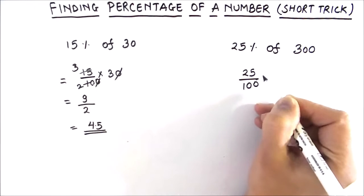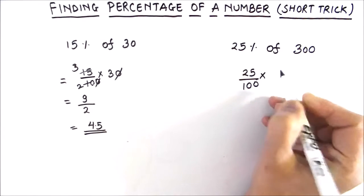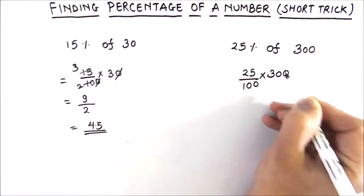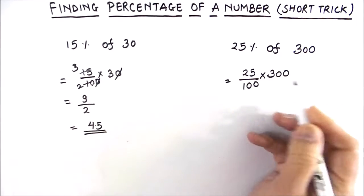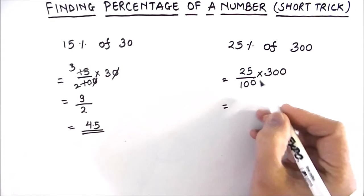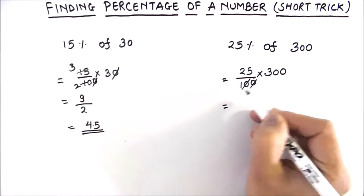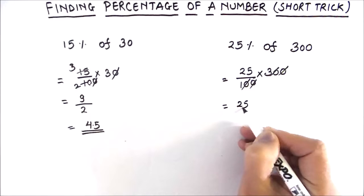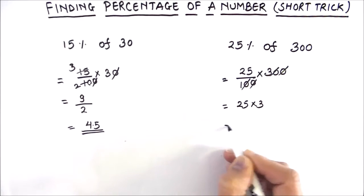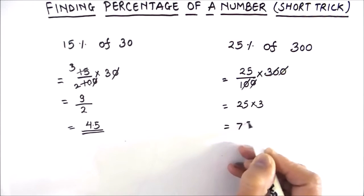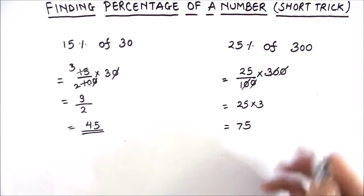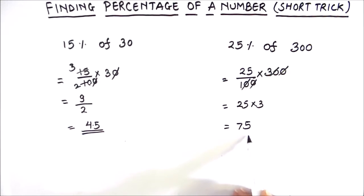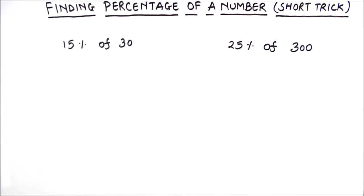Now let's calculate 25 percent of 300. So 25 percent means 25 divided by 100. 'Of' means multiplication and 300 is the number. It is very easy to simplify — the two zeros get cancelled and we are left with 25 times 3, which is equal to 75. So 25 percent of 300 is 75. This is one method to find the percentage of a number.